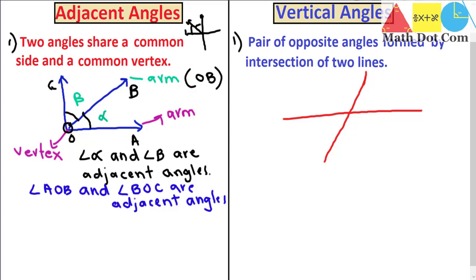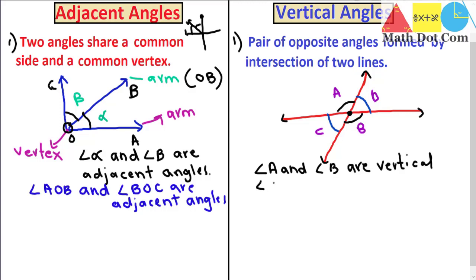The two conditions are: formed by intersection of two lines, and they must be a pair of opposite angles. One angle is here and the other angle is here — these two angles are opposite to each other. Then we have another pair: one angle here and one angle here, also opposite. If I label them: this is angle A, this is B, this is C, and this is D, with the vertex at the intersection point. So angle A and angle C are vertical angles, and angle B and angle D are vertical angles.